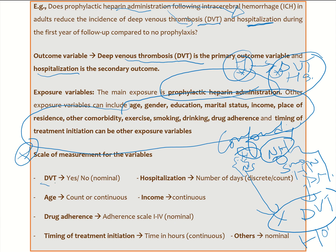As for the scale of measurement of these variables: DVT is going to be measured as yes or no, so it's nominal. Age — if we're studying adult patients, it's count data because for adults we're not interested in measuring the month of their age; we just want the complete age by asking if they're 20, 30, 31, 32. But if we're studying pediatric groups using a continuous scale, it's very important because the difference in months, weeks, or even days for neonatal cases is very important. Hospitalization is going to be measured in number of days — one, two, three, four — so it's discrete data. Income is continuous.